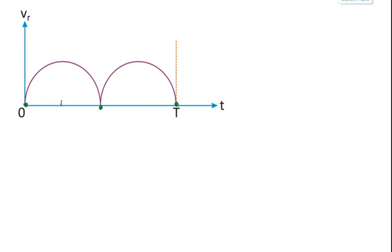So in one complete cycle - this is t by 4, t by 2, 3t by 4, and t - at t by 4 and 3t by 4 they have maximum speed which is 2 omega R, and at these three points it is 0.